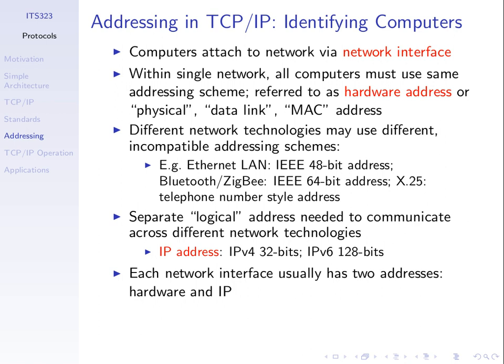The main point is that every network interface has a hardware address for communications on its local network, and every computer that wants to communicate on the internet also has an IP address. The intermediate computers that forward packets are called routers. The source and destination computers are called hosts. We'll cover packet forwarding in more detail after the midterm.